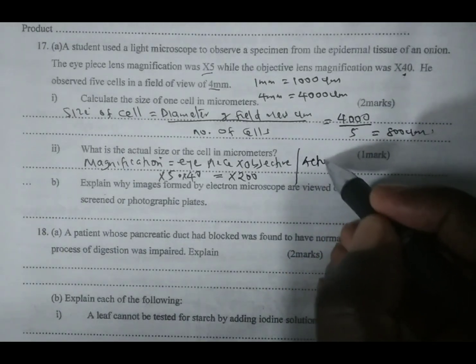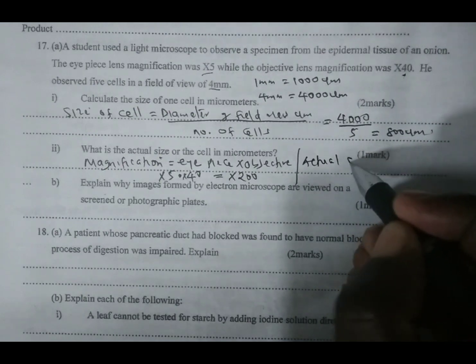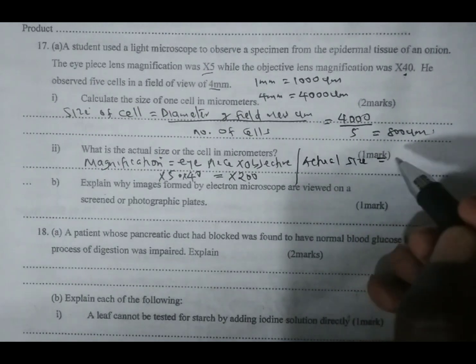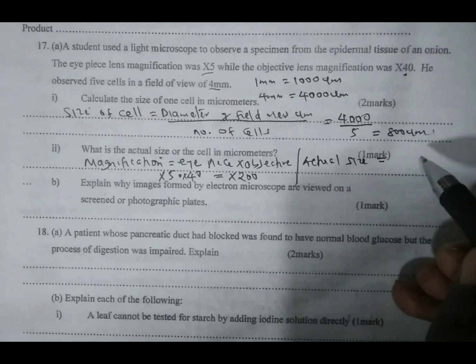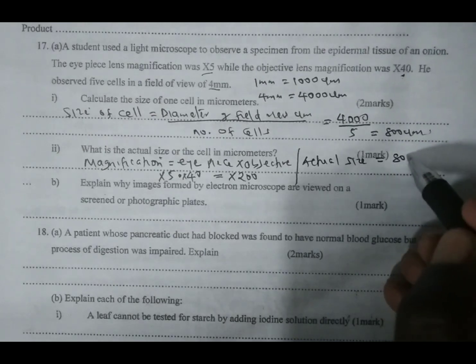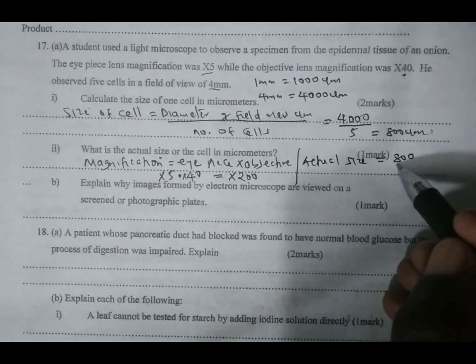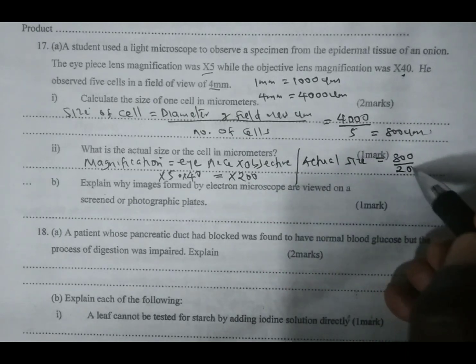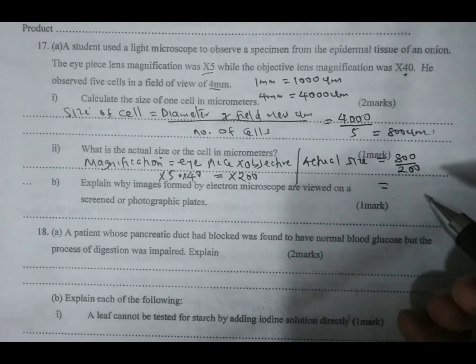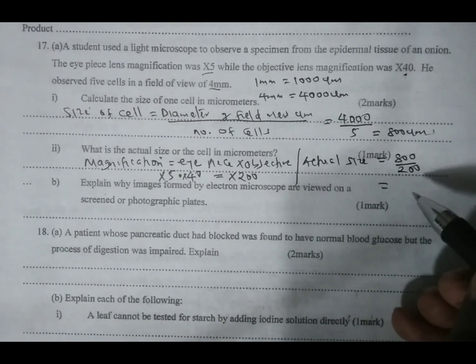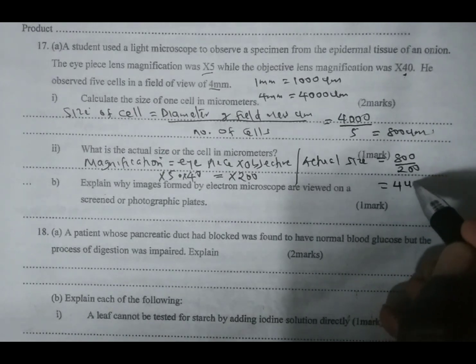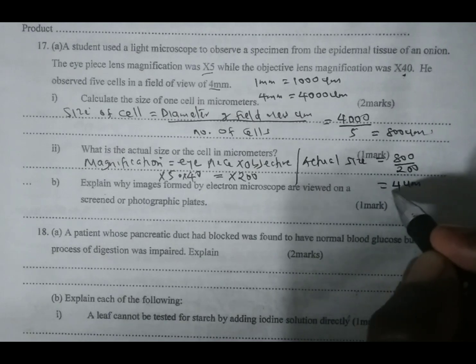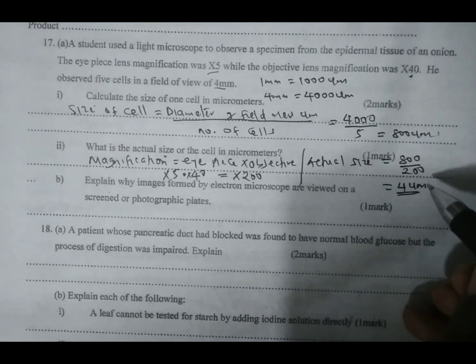To get the actual size of the cell, we take the size of the cell under magnification, which is 800 micrometers, and we divide by the magnification of X200. If you take 800 divided by 200, you get 4 micrometers as the actual size of the cell.